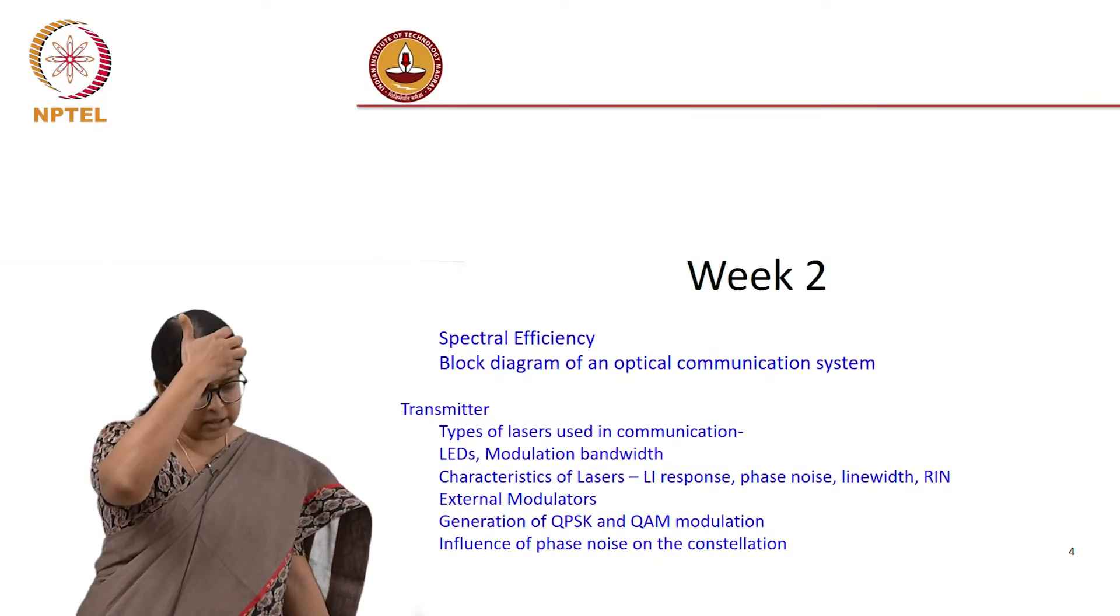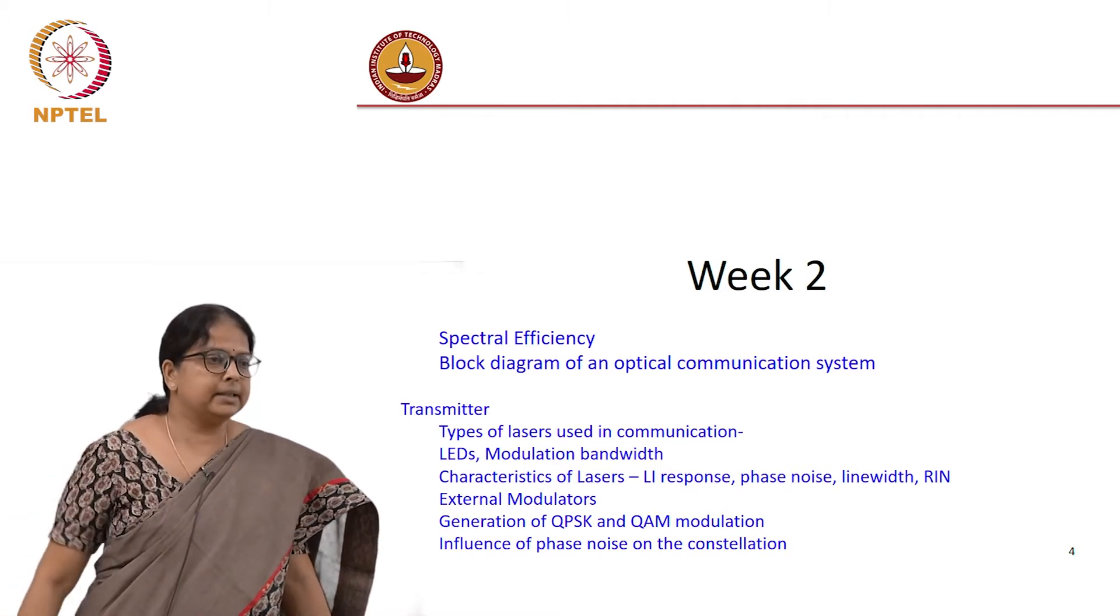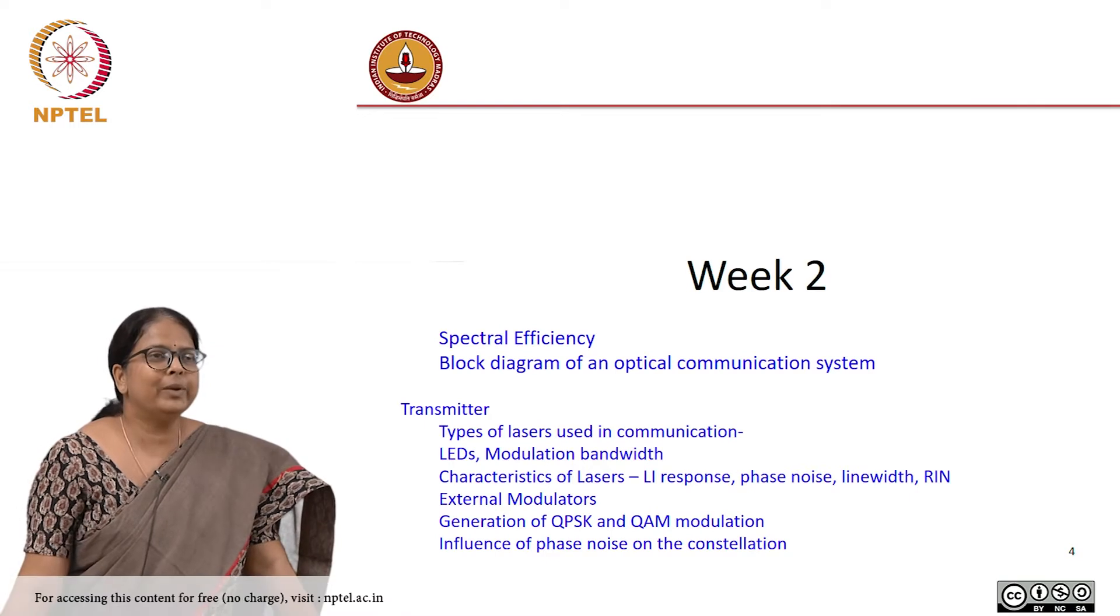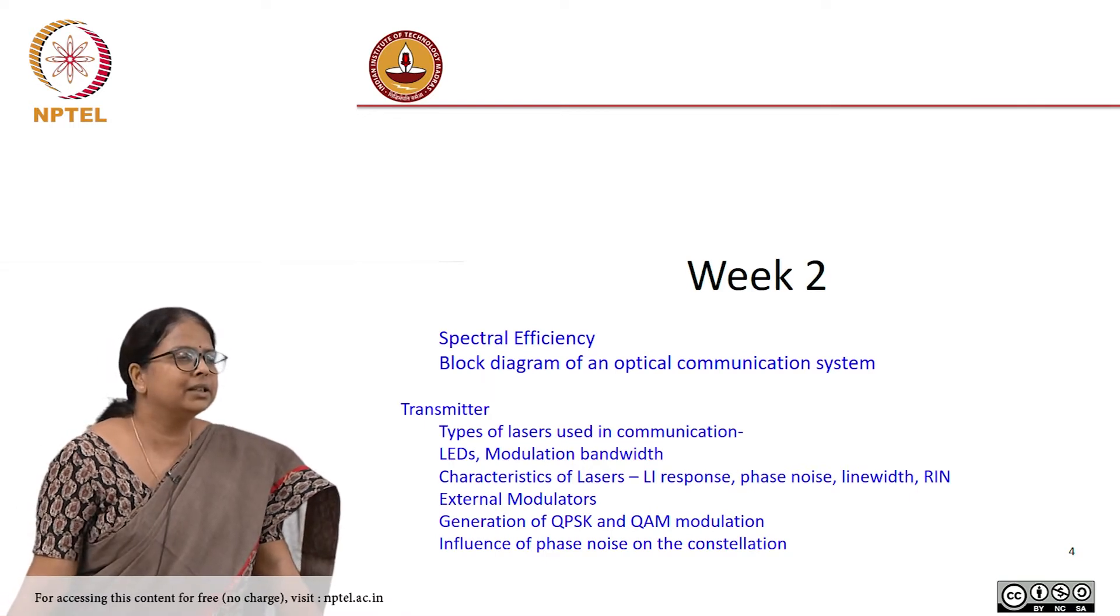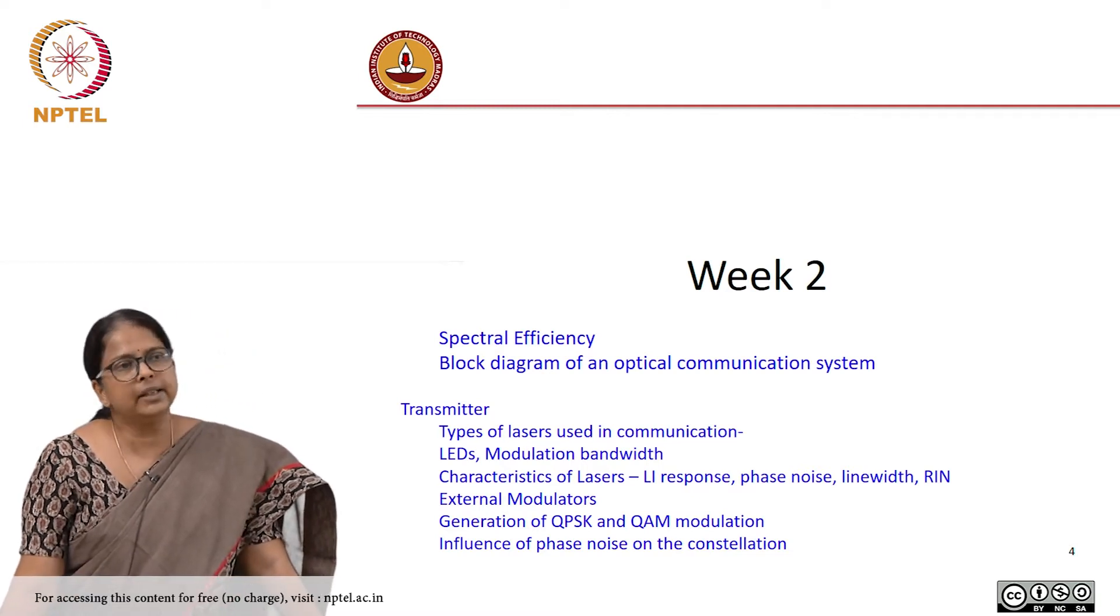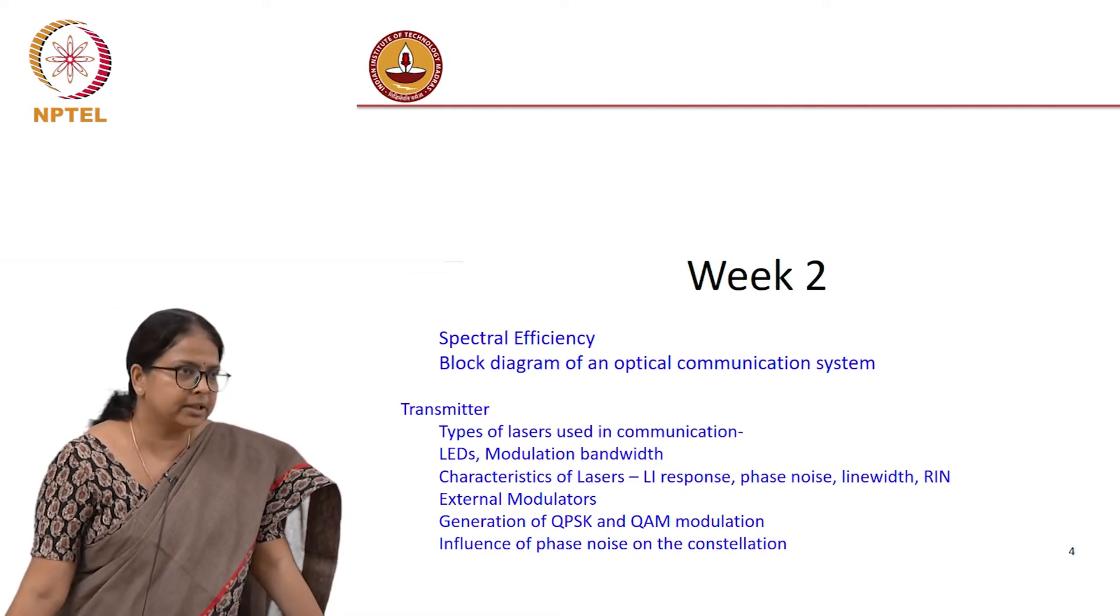We spoke about spectral efficiency last time and I said that is related to the signal to noise ratio. This week we are going to talk about sources that are used for optical communication and some specific critical parameters that would matter as far as optical communication is concerned.